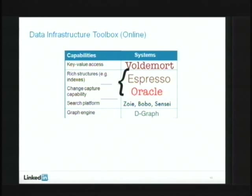We have systems in all of these areas. Voldemort is our fast and efficient key-value store. We use Oracle for primary data stores. We're working on Espresso, which fits the gap between fully key-value and fully relational. On the search platform, we built on top of Lucene: Zoe for real-time indexing, Bobo for faceted search, and Sensei as a distribution layer similar to Solr. DGraph is our distributed graph engine — we don't talk about it a lot but it's pretty interesting.